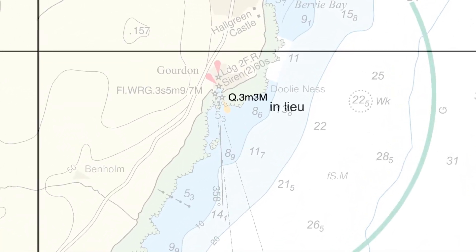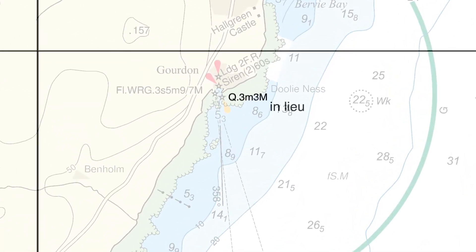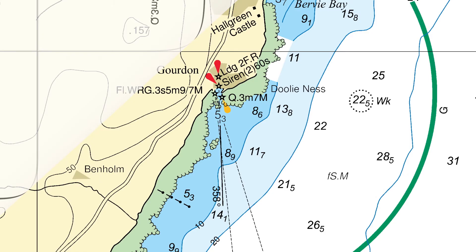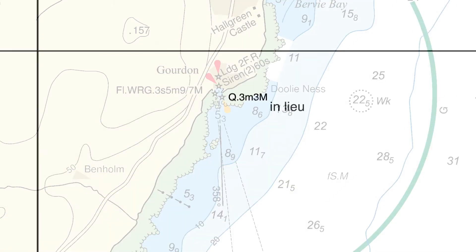Compare the tracing with the chart and determine which range needs to be amended. In this example, the NM indicates that the position remains the same; only the range, 7M, is to be replaced by 3M.